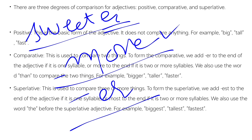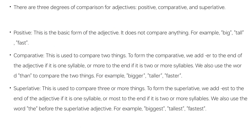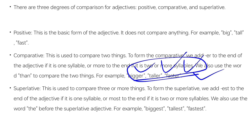If the adjective has two or more syllables, we use 'more' for comparative and 'most' for superlative. For example: interesting, more interesting, most interesting. Also: more beautiful, more talkative, more readable, most readable. To form the comparative we add -er for one-syllable adjectives, or use 'more' for two or more syllables. We also use the word 'than' to compare two things.